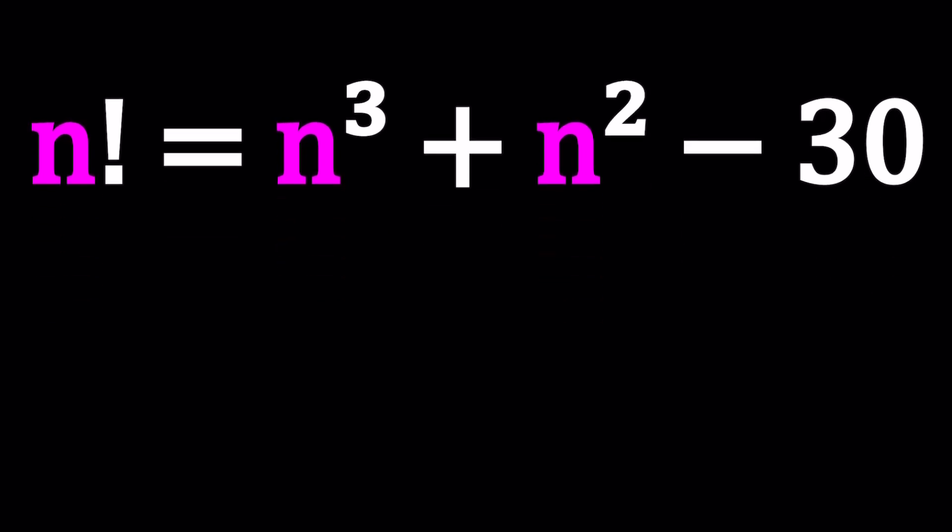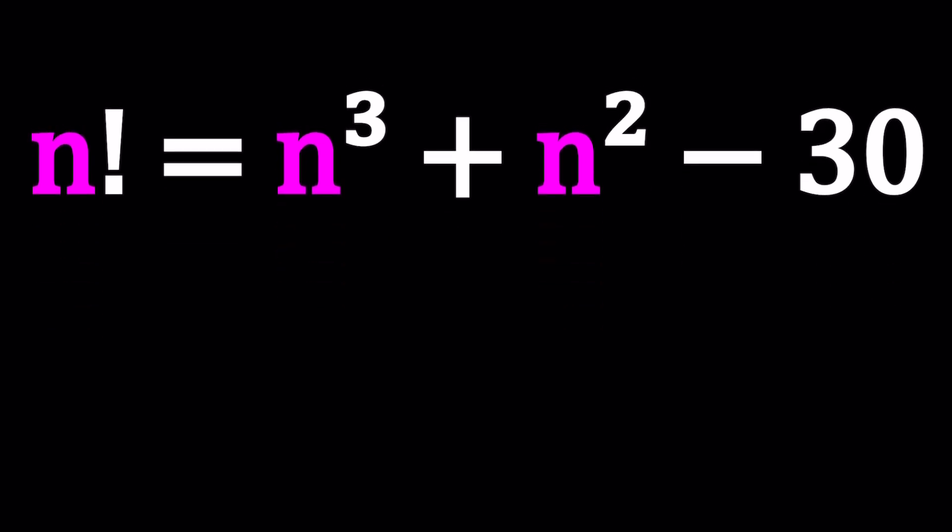So n factorial contains n because it can be written as n times n minus 1 factorial. And this can actually be used to prove that 0 factorial equals 1, because if you replace n with 1, you get 1 factorial equals 0 factorial times 1. Or 1 factorial equals 0 factorial, which means they're both 1. Such a quick proof. Now, that's not all we're after. Let's go ahead and see what we can do.